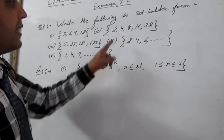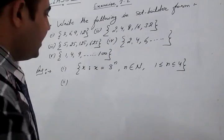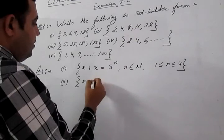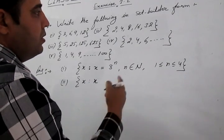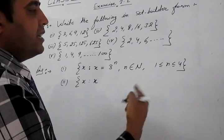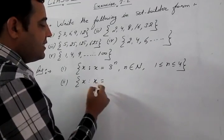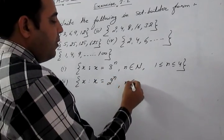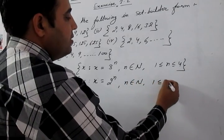Part 2: given {2, 4, 8, 16, 32}. These are powers of 2: 2¹=2, 2²=4, 2³=8, 2⁴=16, 2⁵=32. So we write: x such that x = 2ⁿ, where n ∈ N and 1 ≤ n ≤ 5.